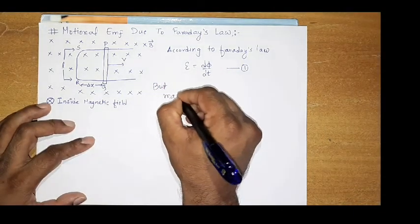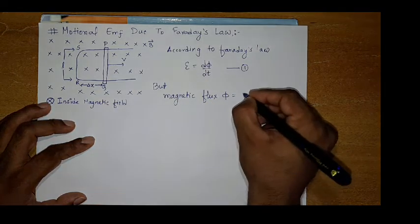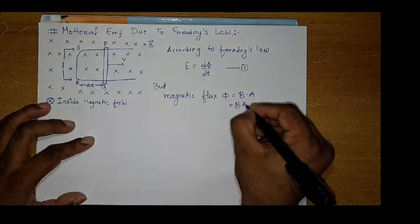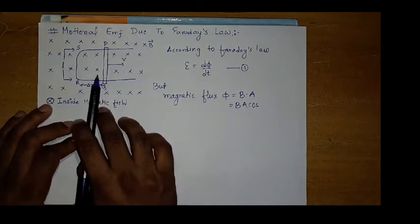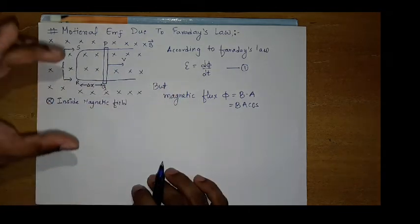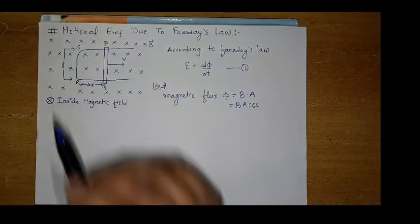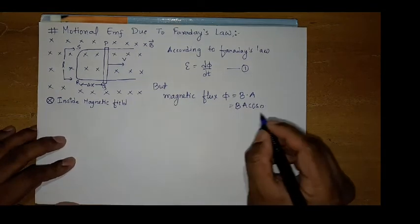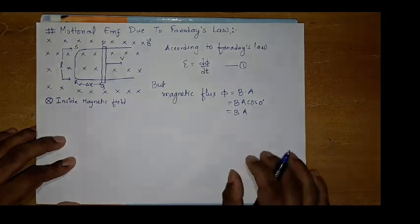But magnetic flux phi is equal to B dot A, which is BA cos theta. What is theta here? You find that the area vector and magnetic field both are in the same direction. This loop, the area vector is perpendicular to surface, and the magnetic field is below the area. The theta angle is 0, so cos 0 degree is 1, so it is only BA.